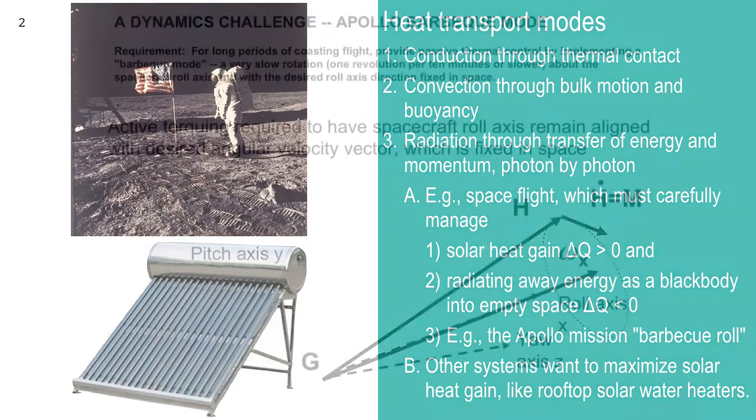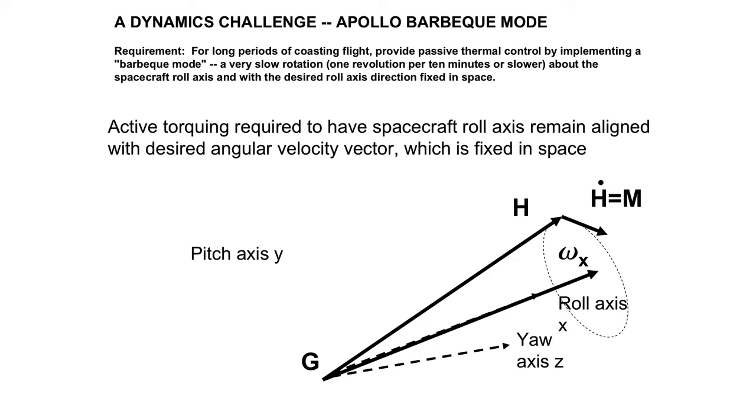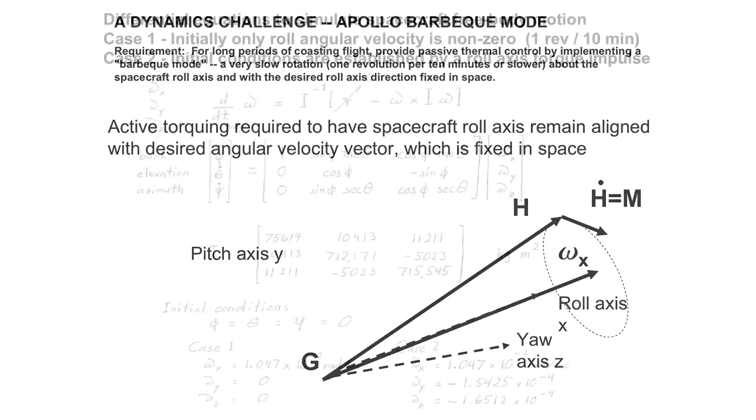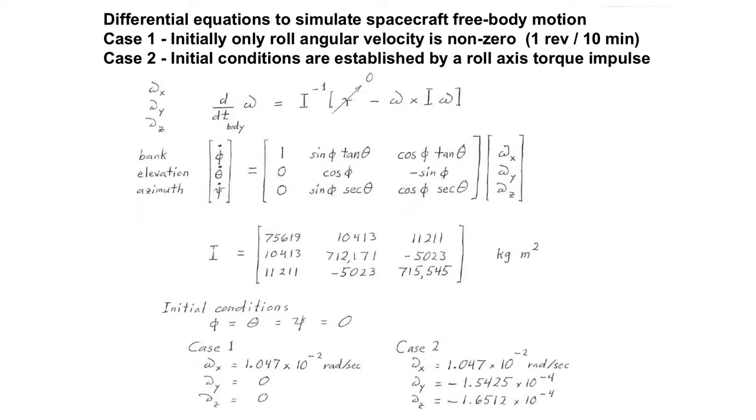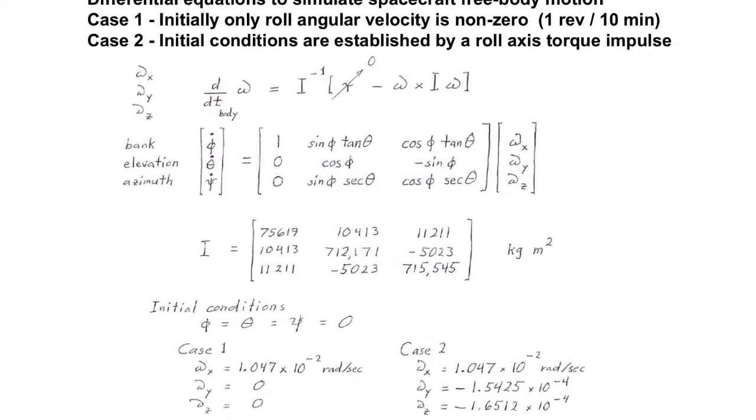In the meantime, since Tuesday, I looked up the barbecue roll. Now, here's some notes from the guys up at MIT that had to help NASA figure out, okay, how are we going to manage this heat? So they came up with the barbecue roll. And so you can see here, dynamics challenge requirement for long periods of coasting flight, provide passive thermal control by implementing a barbecue mode, a very slow rotation, one revolution per 10 minutes or slower, about the spacecraft roll axis, so the central axis of the spacecraft, and with the desired roll axis direction fixed in space. So you can see they got some diagrams. Here's some of the equations. Look at that set of equations.